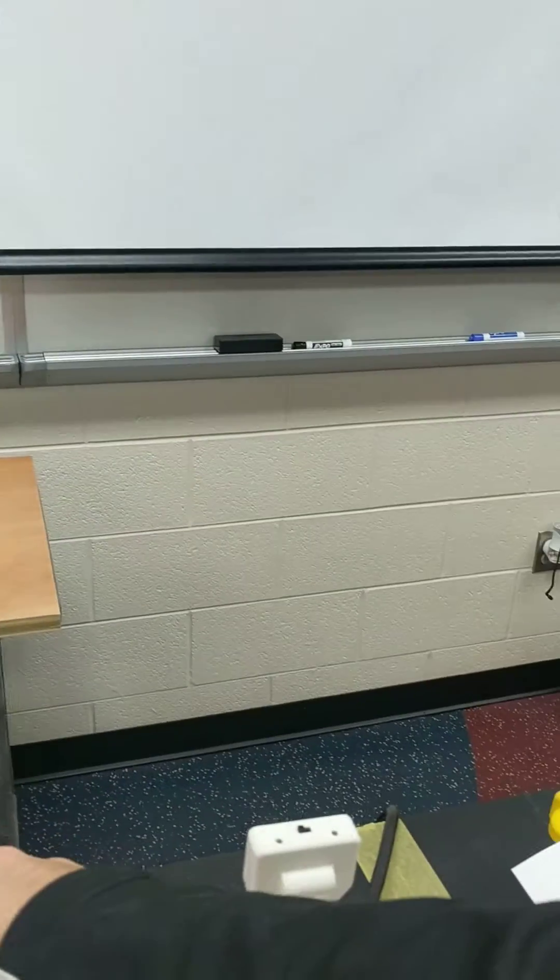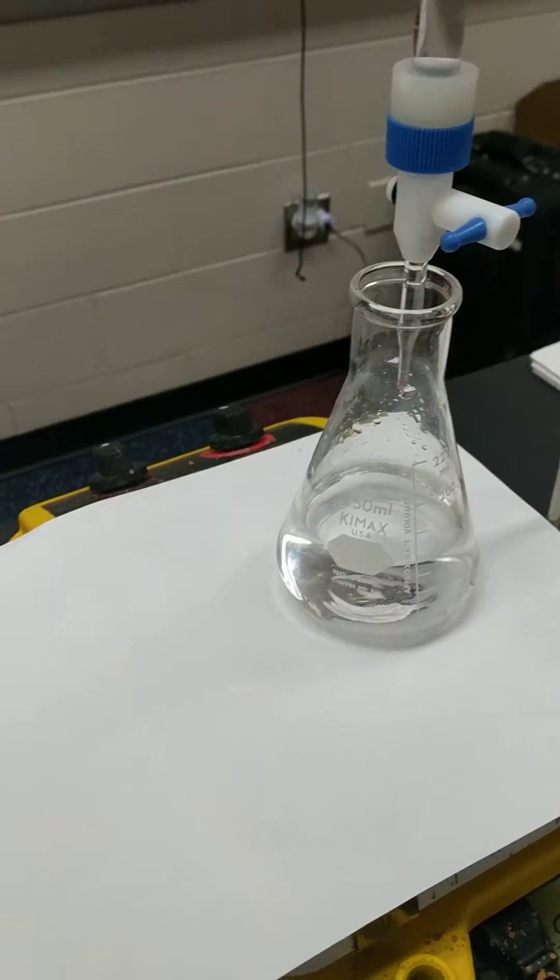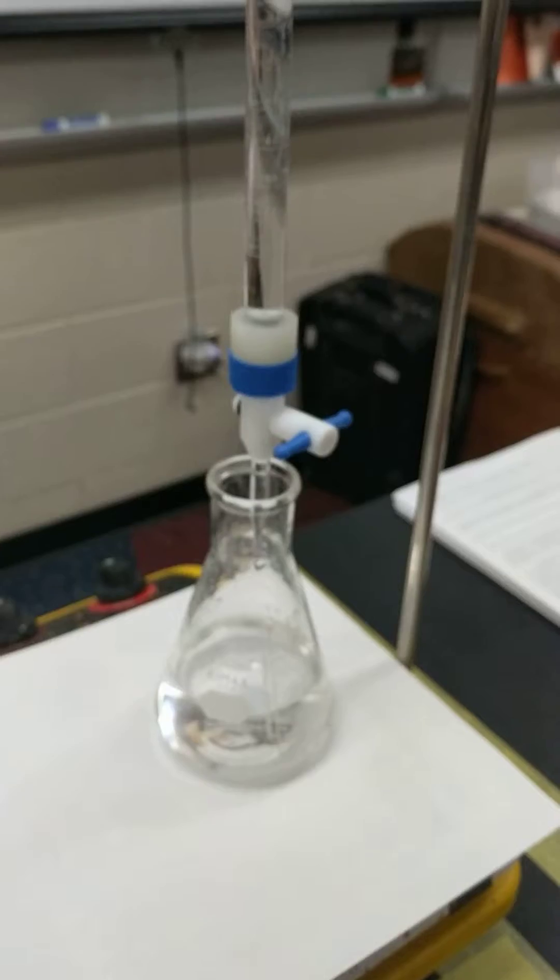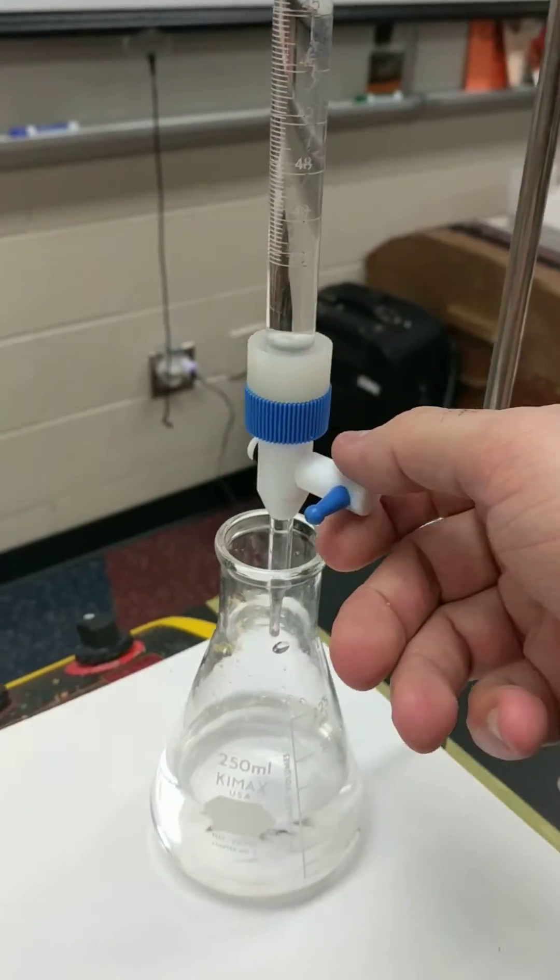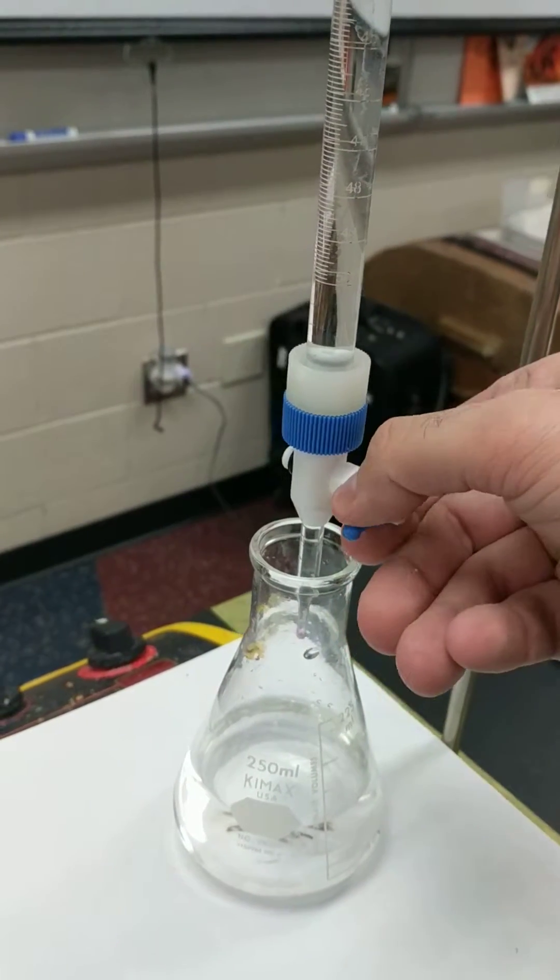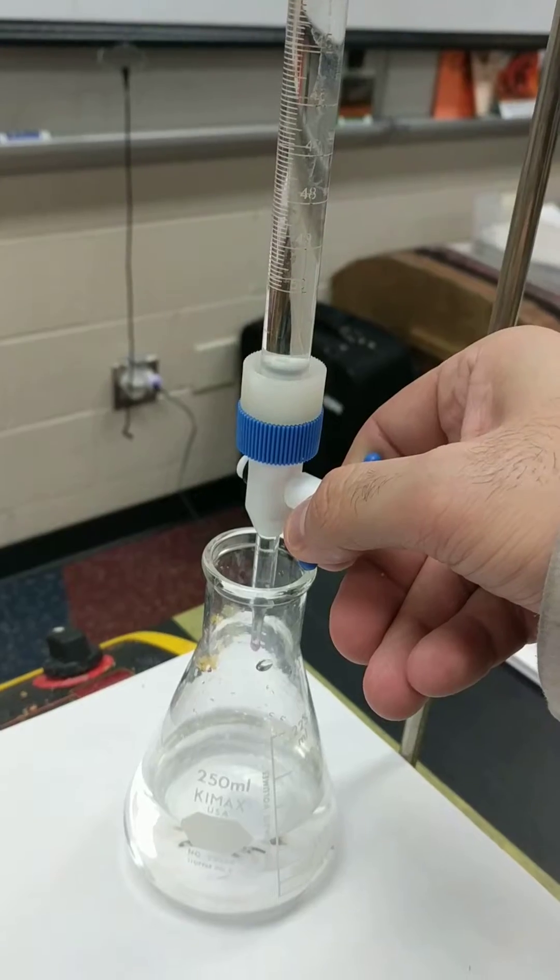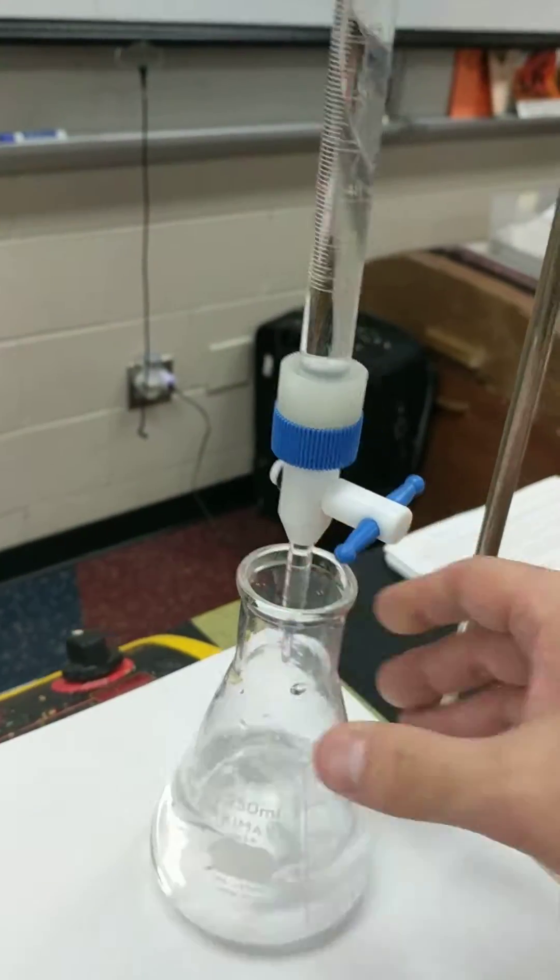So I wanted to show you what a nice faint pink endpoint would be. In this example I have here, I already started dropping the titrant into here. I used a lot of solution, and now I'm going to show you that I'm just going to drip a little bit at a time, not a lot. So I'm opening the stopcock just a little bit so it drops a little bit. So look, I did two drops and the color disappears.